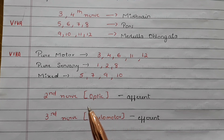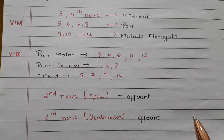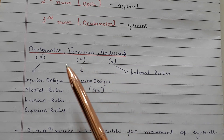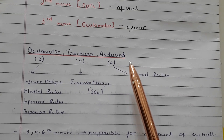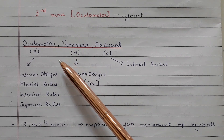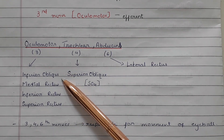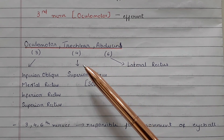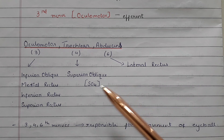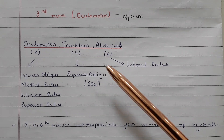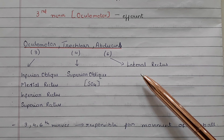The second cranial nerve, the optic nerve, is the afferent nerve, and the third cranial nerve, the oculomotor nerve, is the efferent nerve. The third, fourth, and sixth cranial nerves — the oculomotor, trochlear, and abducens — are combined together because they help in eye movement. The oculomotor nerve innervates the inferior oblique, medial rectus, inferior rectus, and superior rectus. The trochlear nerve innervates the superior oblique — remember this as SO4. The abducens nerve innervates the lateral rectus muscle.